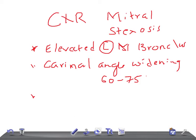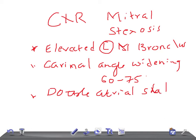Then we have what you call double atrial shadow, also referred to as double atrial density.